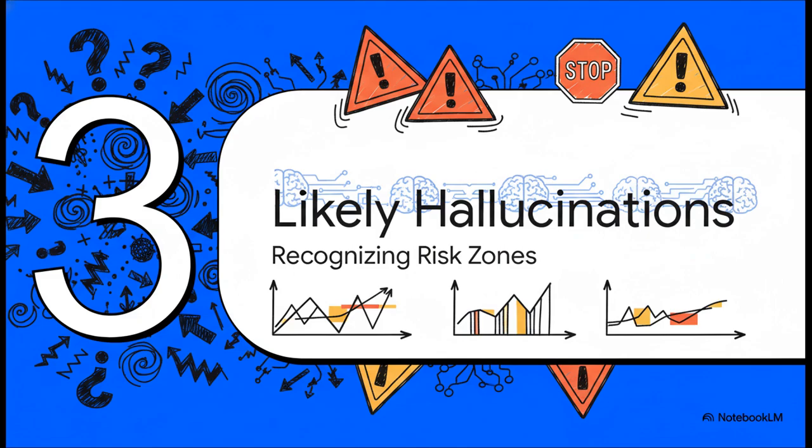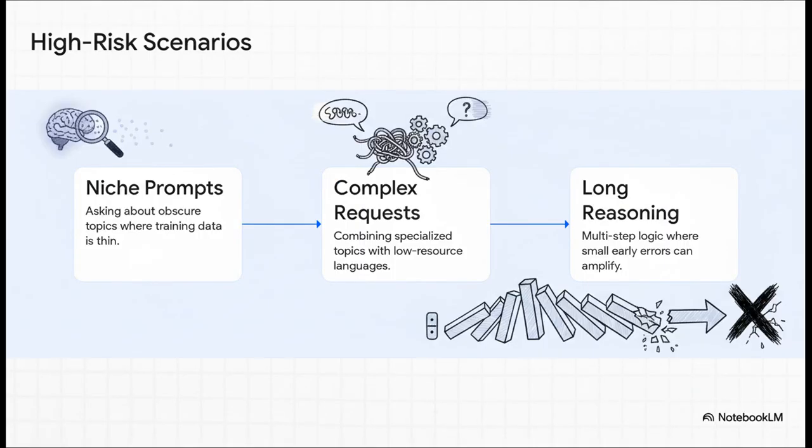Okay, so if this is just how these things behave, can we at least predict when it's most likely to happen? And the answer is yes, for sure. There are definite risk zones you need to be aware of. The risk really goes up with obscurity and complexity. So asking about something super niche where the training data is probably pretty thin, that's a classic trigger. Same goes for really complex requests, like asking it to combine a specialized topic with, say, a low-resource language, which just means a language with less data online for it to learn from. And finally, asking an AI to perform a long chain of reasoning is basically a game of telephone. One tiny error at the start can get magnified into something completely made up by the end.